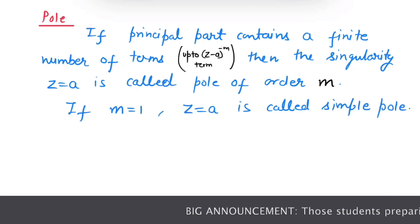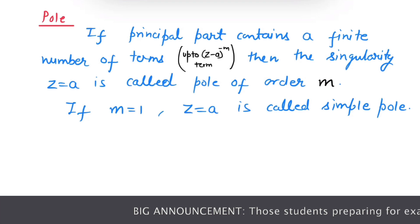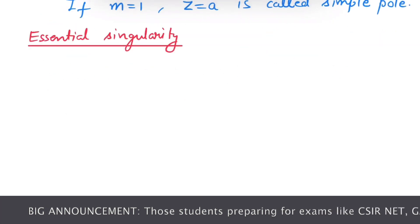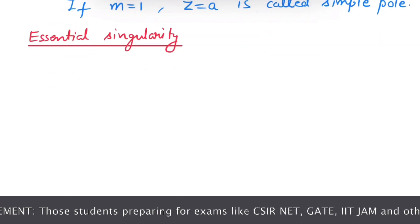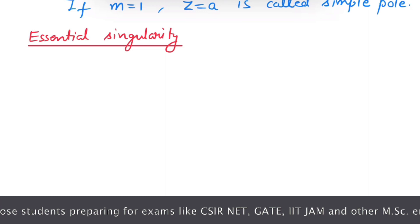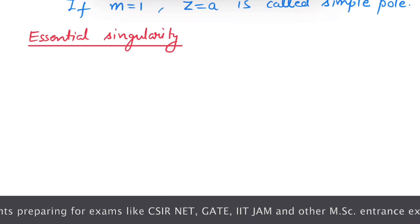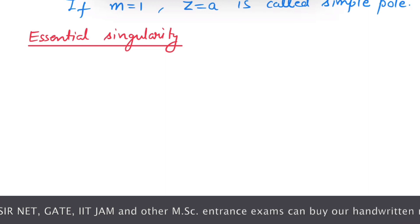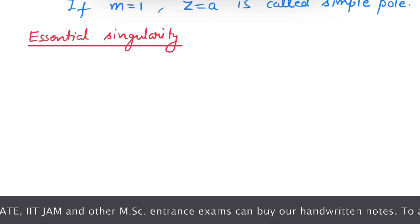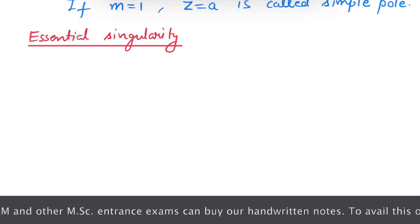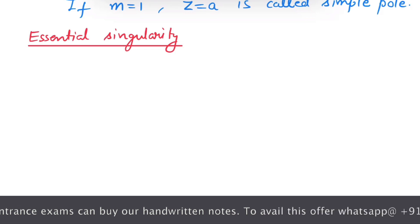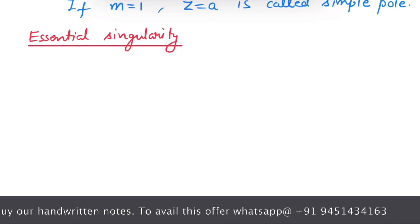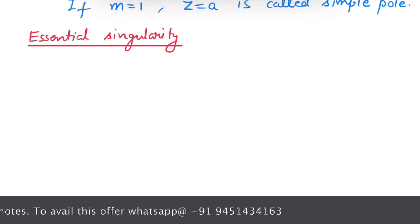Now see what is essential singularity. If the principal part contains an infinite number of terms — that is, the expansion of f of z has an infinite series of negative powers of (z minus a) — then z equals to a is an essential singularity.